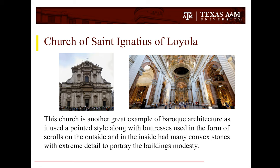The Church of St. Ignatius of La Lloia is another great example of Baroque architecture, as it uses a pointed style along with buttresses in the form of scrolls on the outside. On the inside, it had many convex stones with extreme detail to portray the building's modesty.